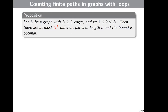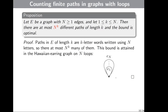Let E be a graph with N greater than or equal to 1 edges, and let K be between 1 and N. Then there are at most N^K different paths of length K, and the bound is optimal. The proof is very easy: every path in E of length K is a K-letter word written using N letters, so there are at most N^K of them.